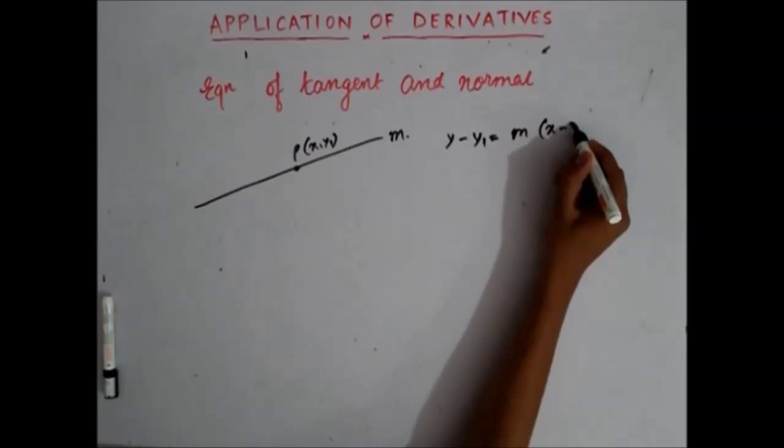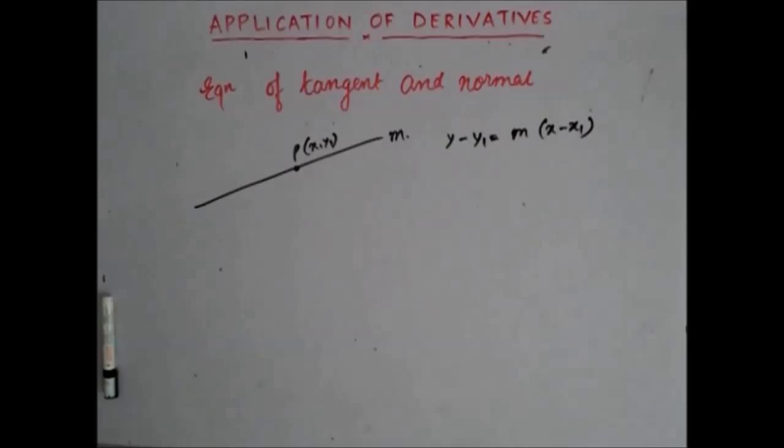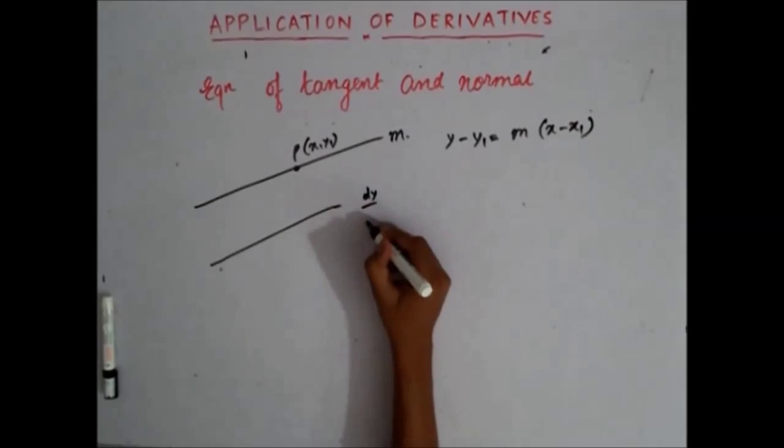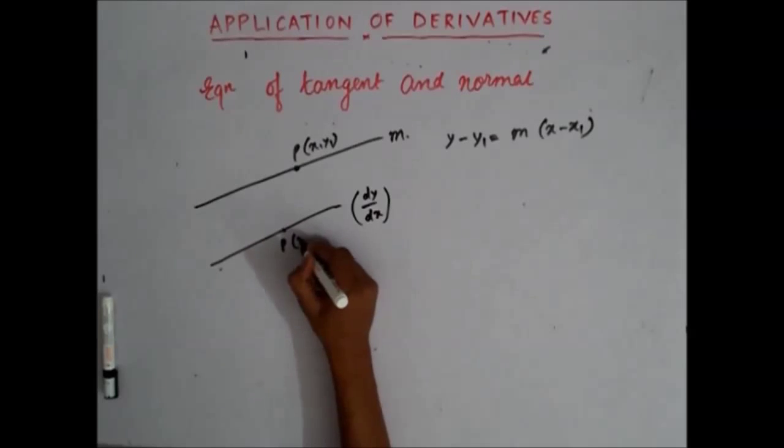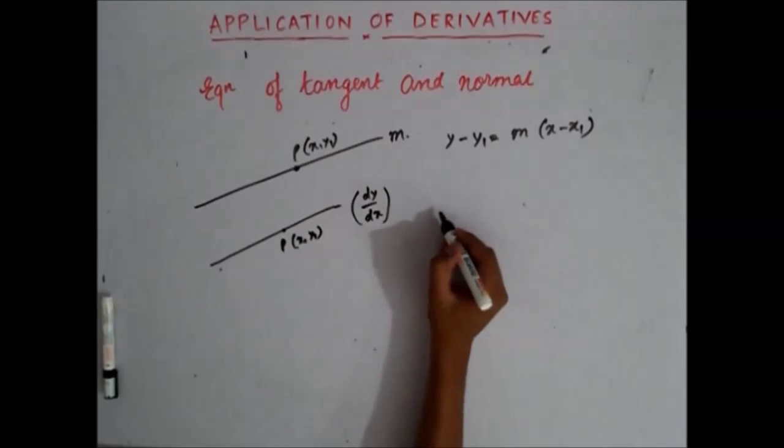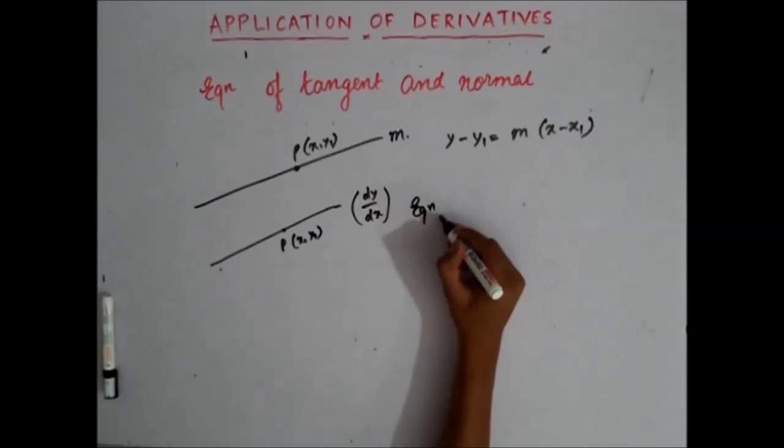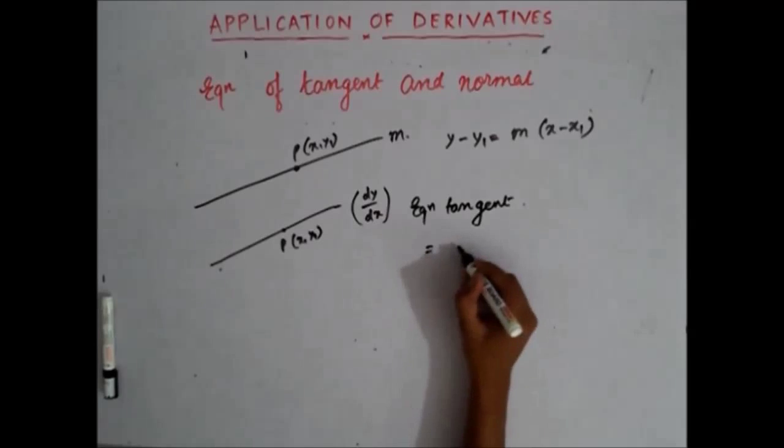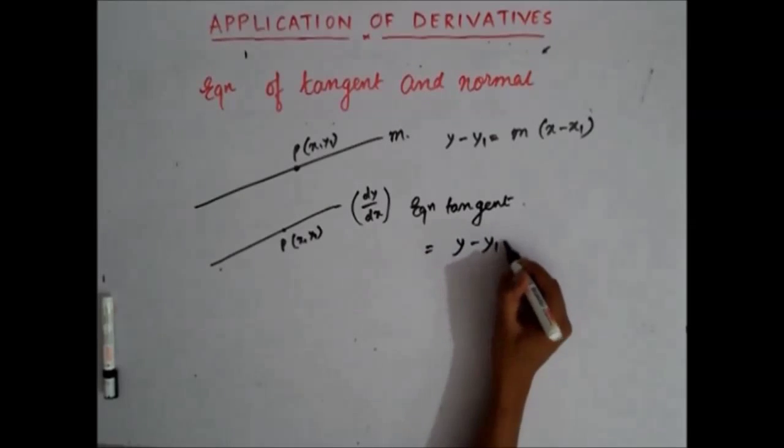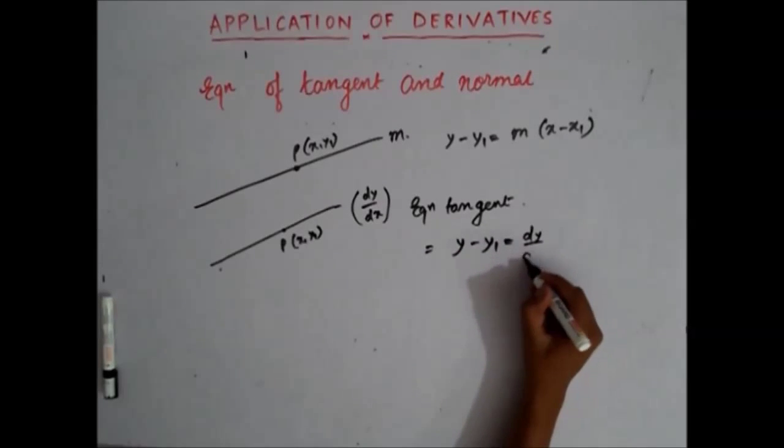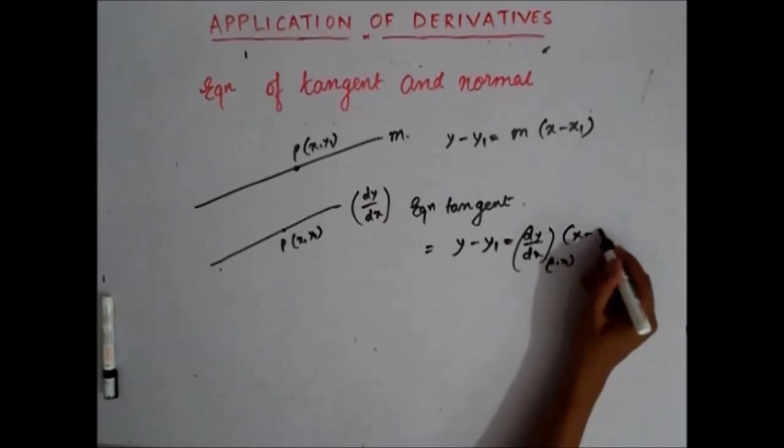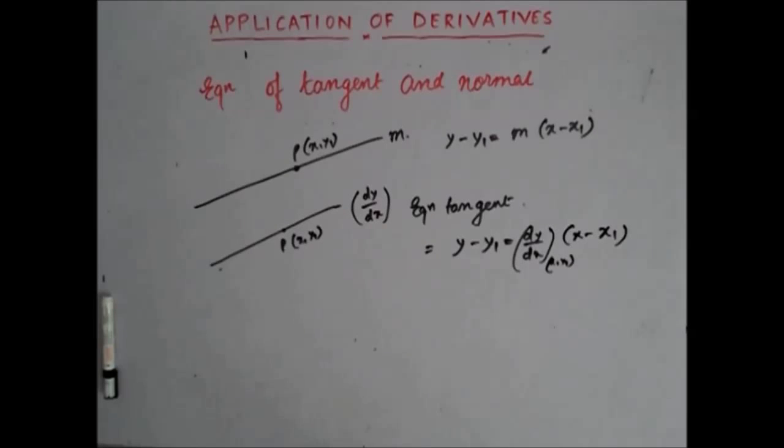You know that the tangent is also a straight line whose slope is given by dy/dx and which passes through some point P at (x1, y1). So the equation of the tangent will be: y minus y1 equals dy/dx at (x1, y1) times (x minus x1). So this is the equation of tangent.